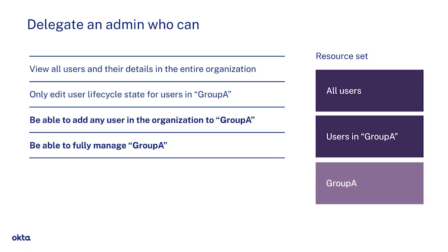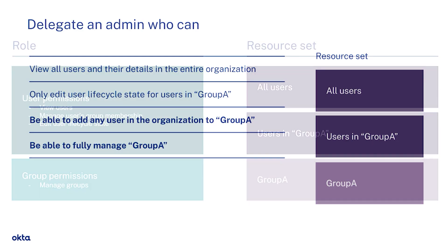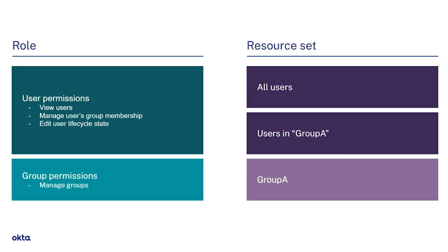And lastly, in order to add any user in the organization to Group A, Peter will not only need access to the all users resource, but he'll also need access to the group resource Group A, which is also needed for him to manage that group. Now when we consider the permissions needed, if we structured the role and resource set like this, this admin role would then give all the user permissions to all the user resources defined, which wouldn't be the least privileged scoping required and would not accomplish what we set out to do.